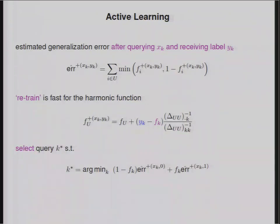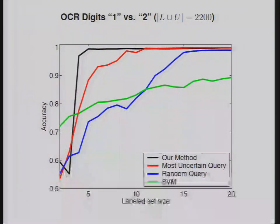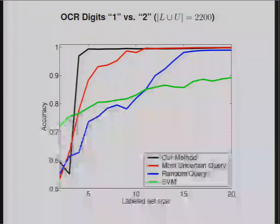We can compute this efficiently for a pool of points. Then we select the point that minimizes the expected generalization error. Here's the sort of results that we get, which is interesting. Here is classifying 1s versus 0s. On this axis, we have the size of the labeled set. And here is the accuracy. If you pick 5 points using this active learning method, you get something like 98% accuracy on this problem. That's choosing 5 good points.